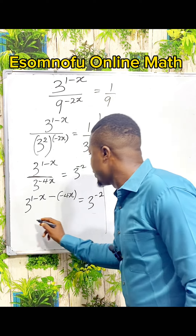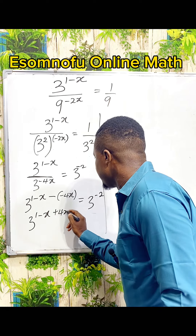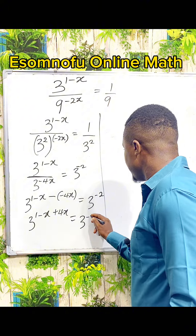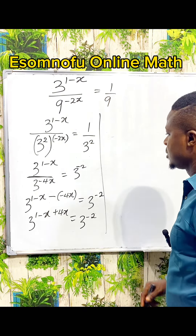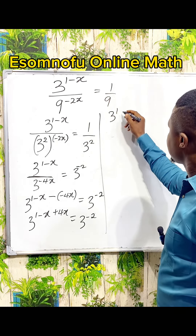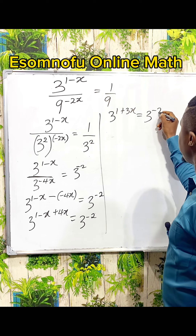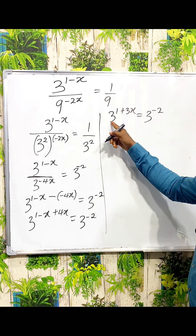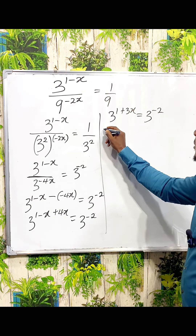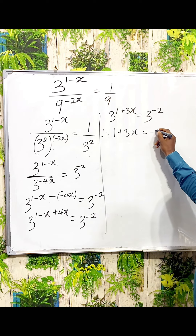So we have 3 power 1 minus x, minus minus is plus 4x, equal to 3 power minus 2. So we have 3 power 1 plus 3x equal to 3 power minus 2. From here, the bases are the same thing — 3 and 3. Automatically, the powers should be the same. Therefore, 1 plus 3x should be equal to minus 2.